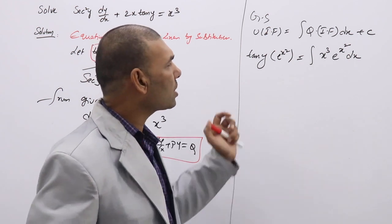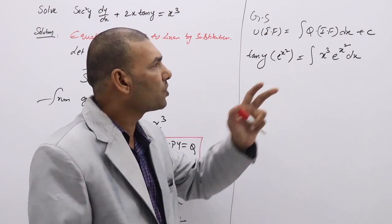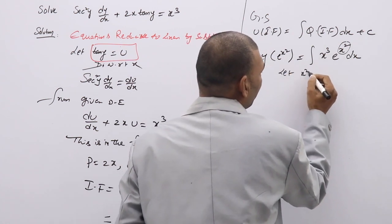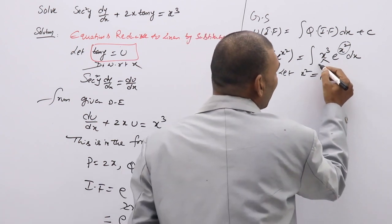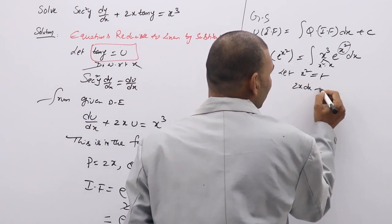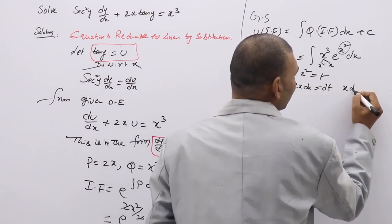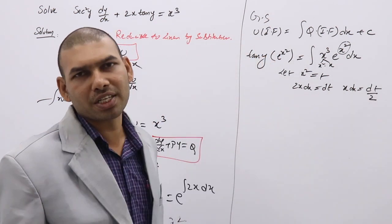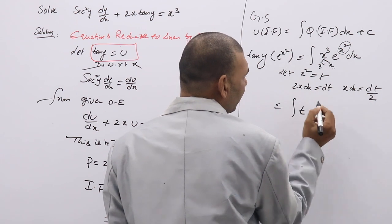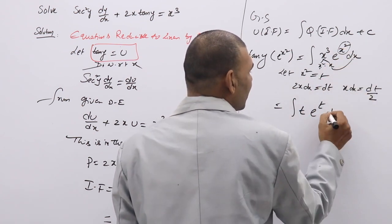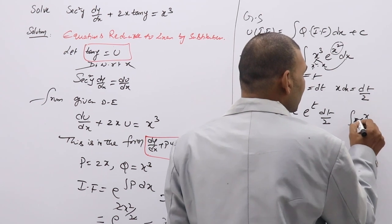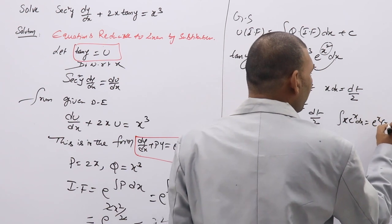To solve this integral, we cannot solve it directly. We substitute x² = t. Then x³ can be written as x²·x = t·x. Also, 2x dx = dt, so x dx = dt/2. Using the formula ∫x·e^x dx = e^x(x − 1), we get: ∫t·e^t · (dt/2) = (1/2)·e^t·(t − 1).